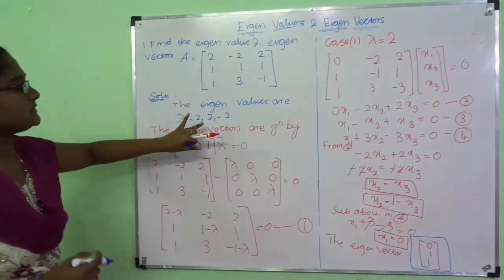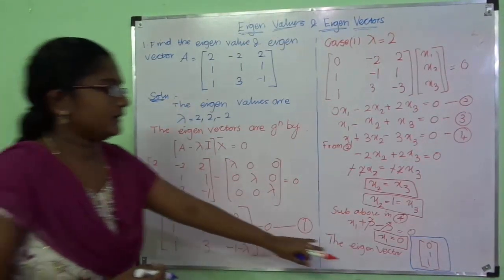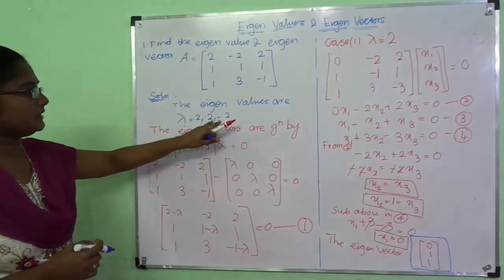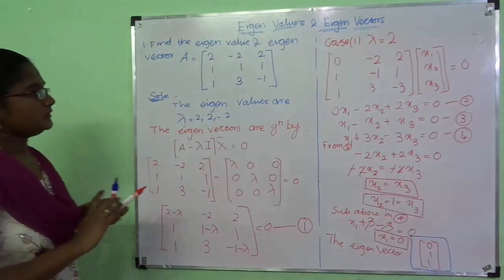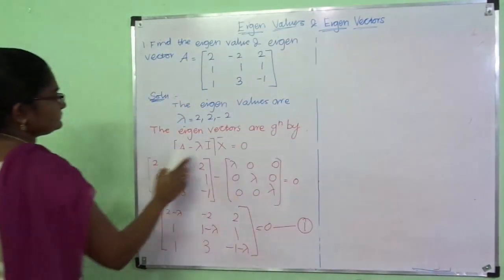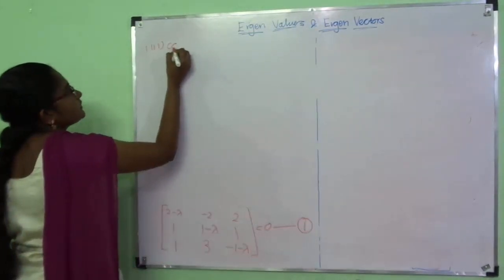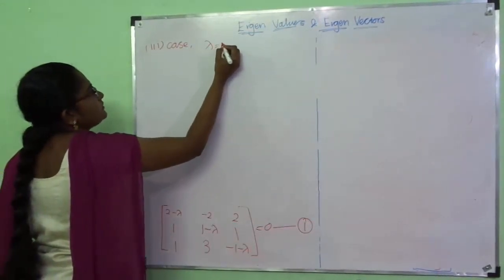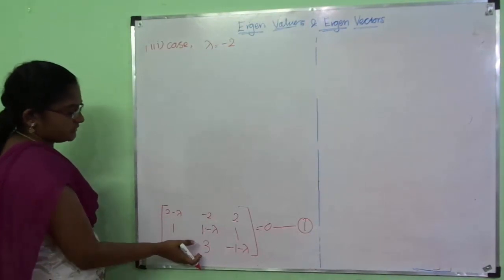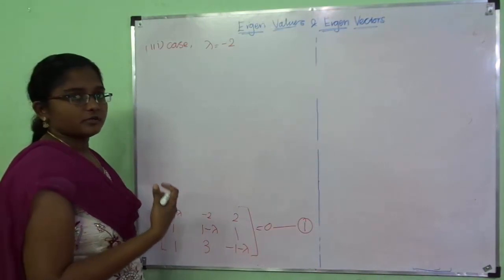The next eigenvalue is also 2 — if we derive it we will get the same eigenvector, so I am not doing that here. I am moving to the next eigenvalue, lambda equal to minus 2. Case 3: eigenvalue lambda = minus 2. We substitute this lambda value into equation 1 to get a matrix, form equations, and find the eigenvector.